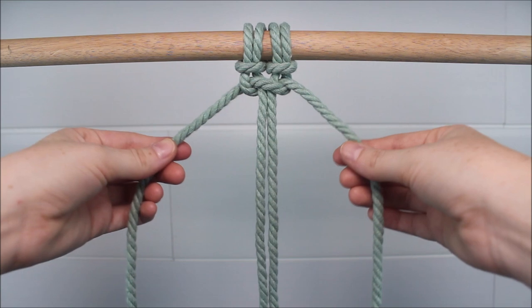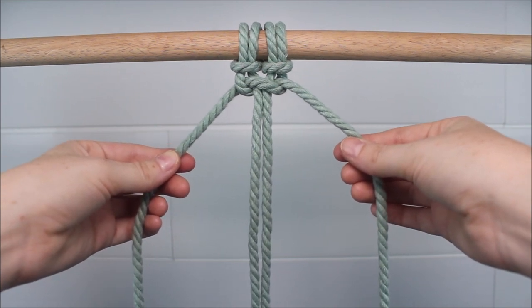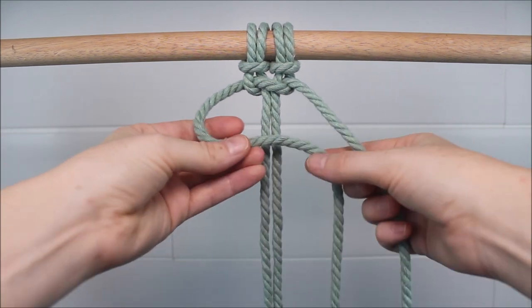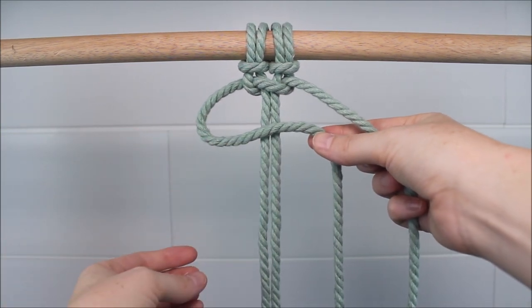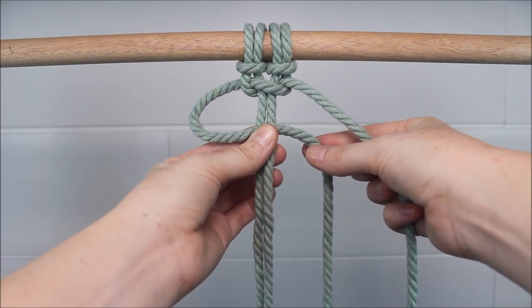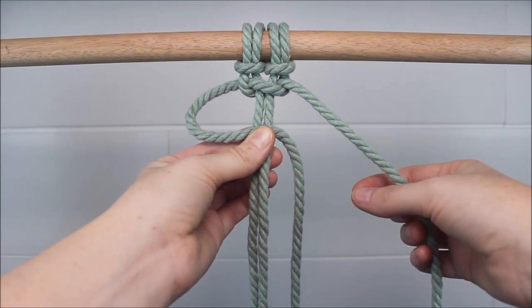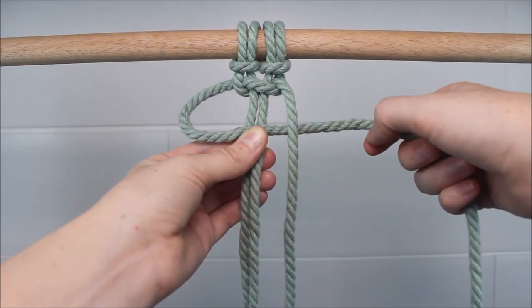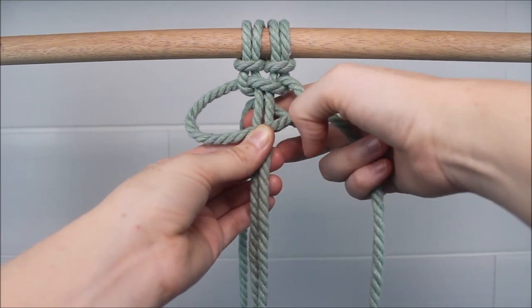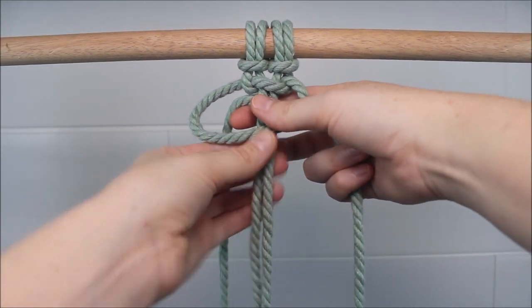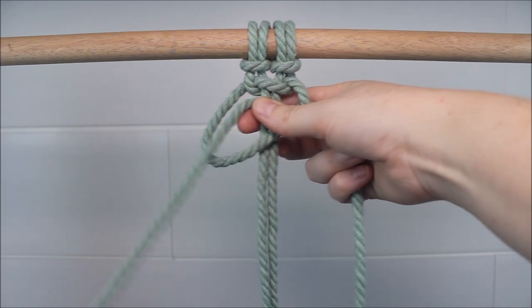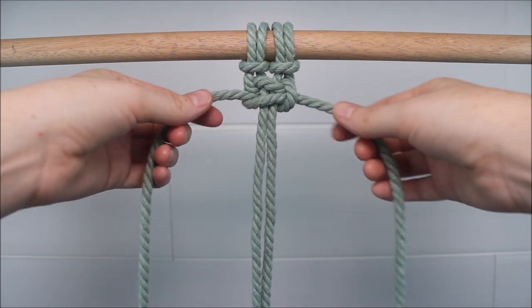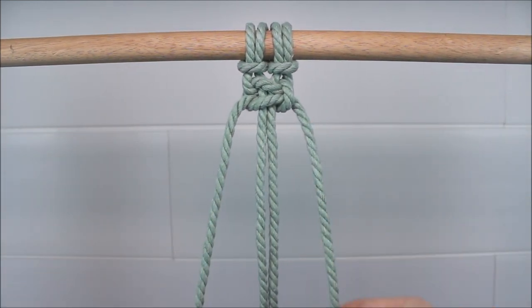This is a half square knot. Now we're going to finish out our square knot by this time taking the cord on the left side and crossing it over the two cords in the middle to form our loop. Again, I pinch it where everything kind of connects to hold my place. Then the cord on the right side crosses over that left cord. I send it behind the two cords in the middle and pull it up through the loop.